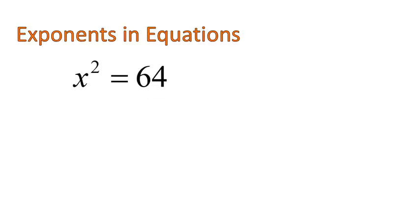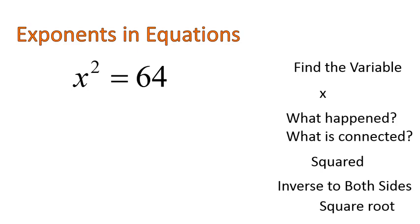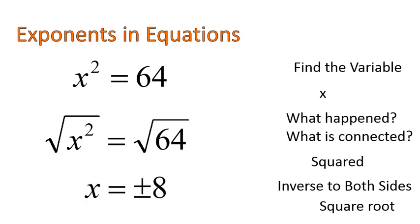So here it is. We have an equation. x squared equals 64. I'm going to go through this process. We find our variable, x. We ask, what happened to x? Well, it was squared. So we're going to do the inverse. And as I said earlier, the inverse of squaring a number is taking the square root of a number. So that will look like this. We'll be taking the square root of x squared on the left and the square root of 64 on the right, which gives us our answer that x is equal to both plus and minus 8. 8 to the power of 2 is 64. Negative 8 to the power of 2 is also positive 64. So that's the process for solving equations that have x squared in them.